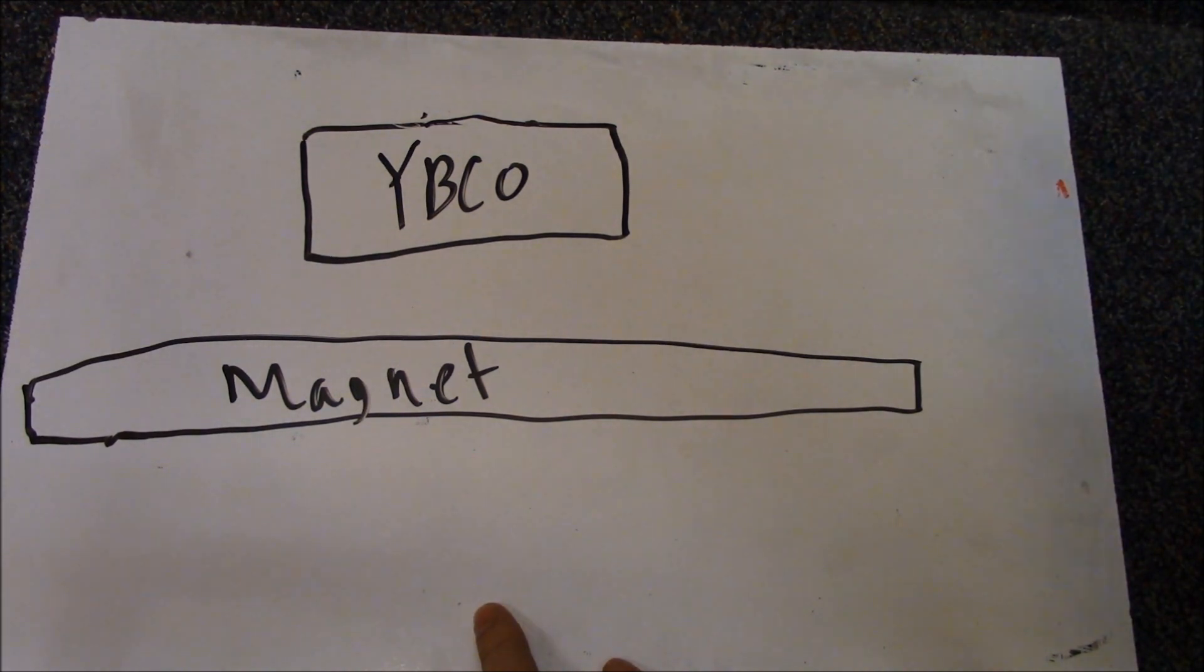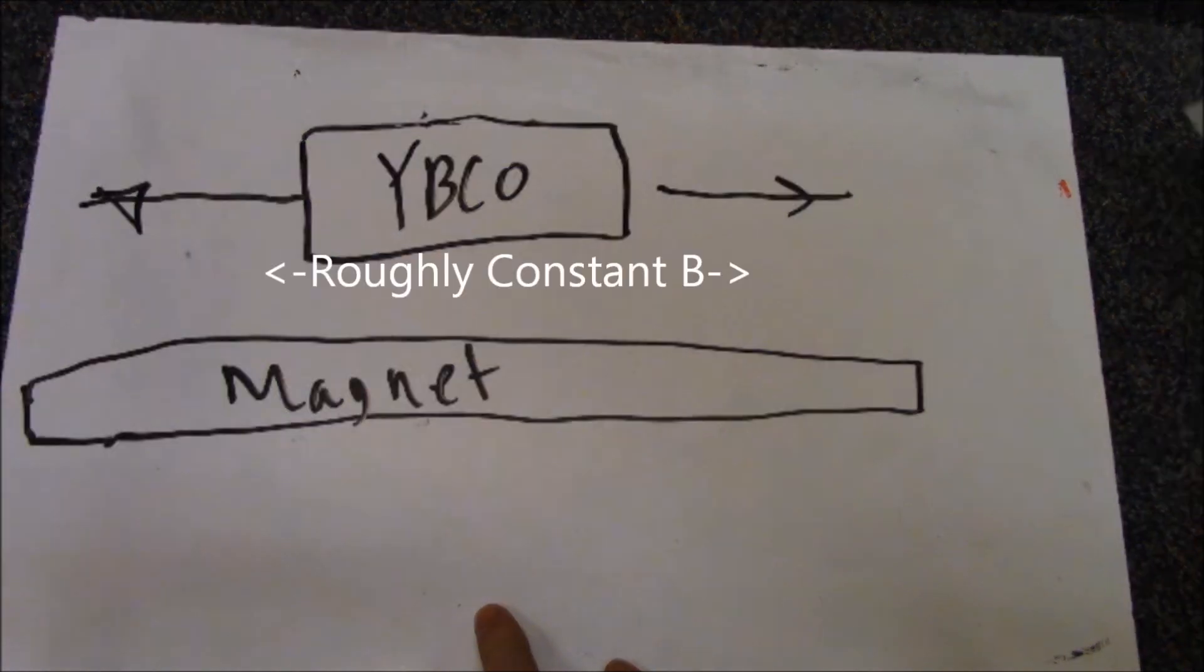If I have a wider magnet, the puck is free to move side-to-side. This is because the magnetic field is more or less constant along the length of the magnet.